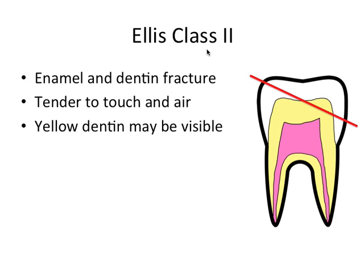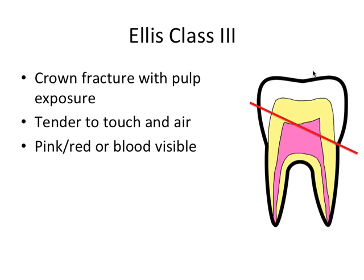Ellis class 2 involves enamel and the dentin layer. Dentin is now exposed to the oral cavity, so you have a fast track via dentinal tubules to the pulp. You can imagine that this tooth would be tender to both touch and air, and the yellow dentin may be visible. Treatment involves restoring lost tooth structure and rebonding that fragment or creating a more definitive restoration with composite.